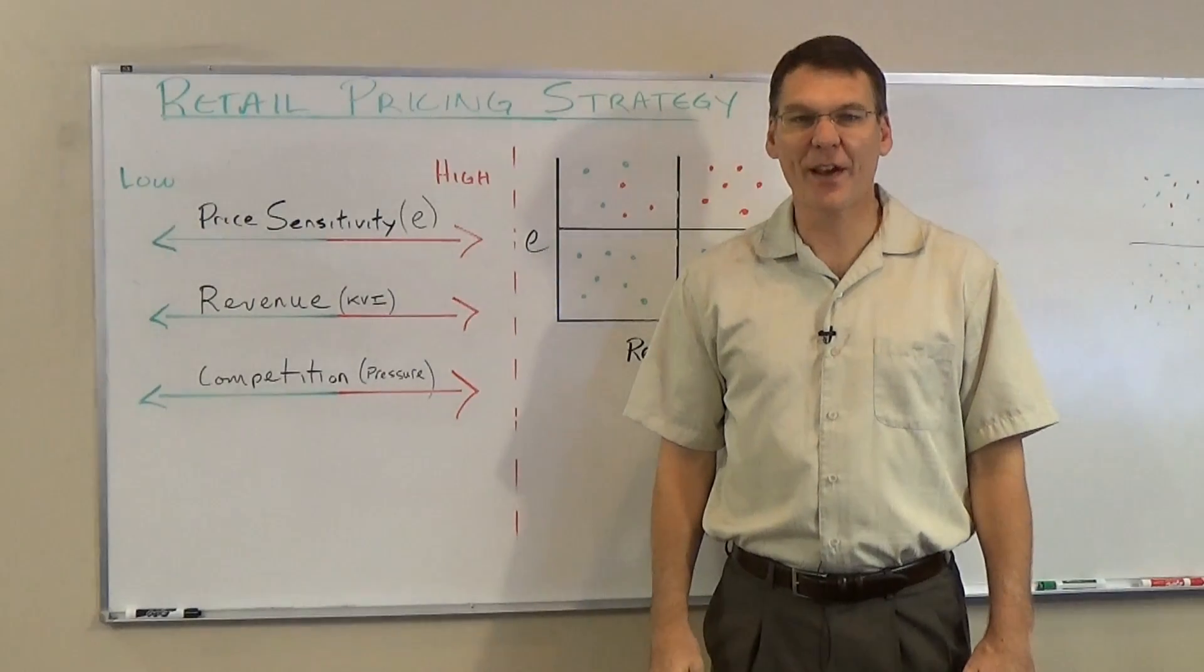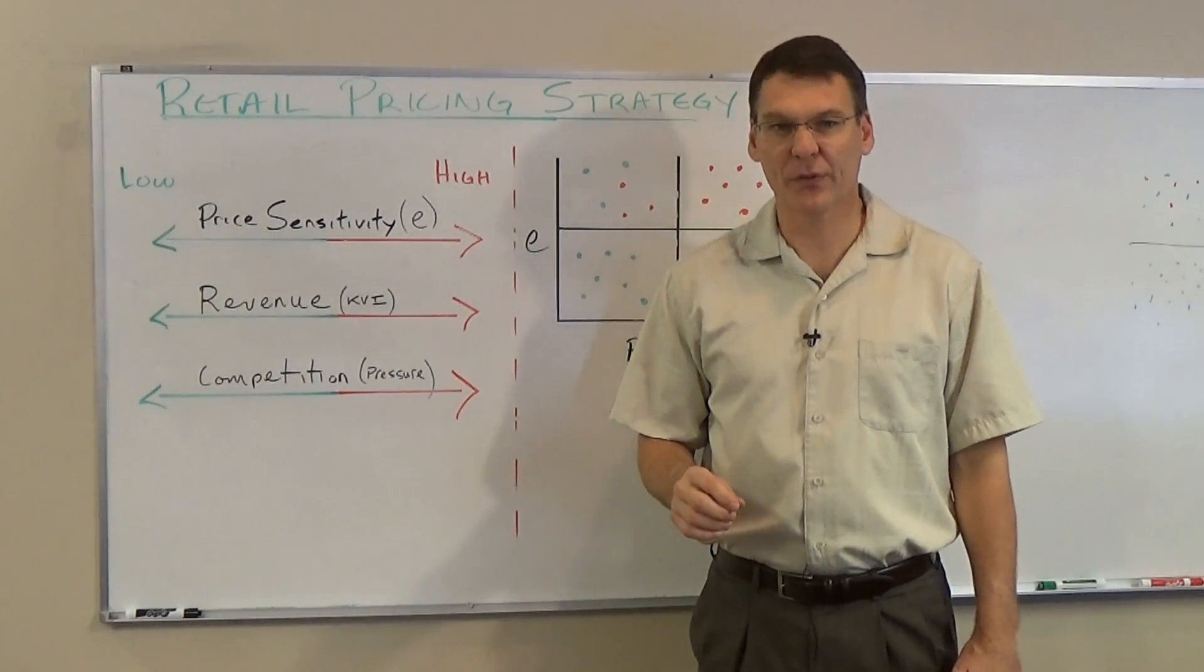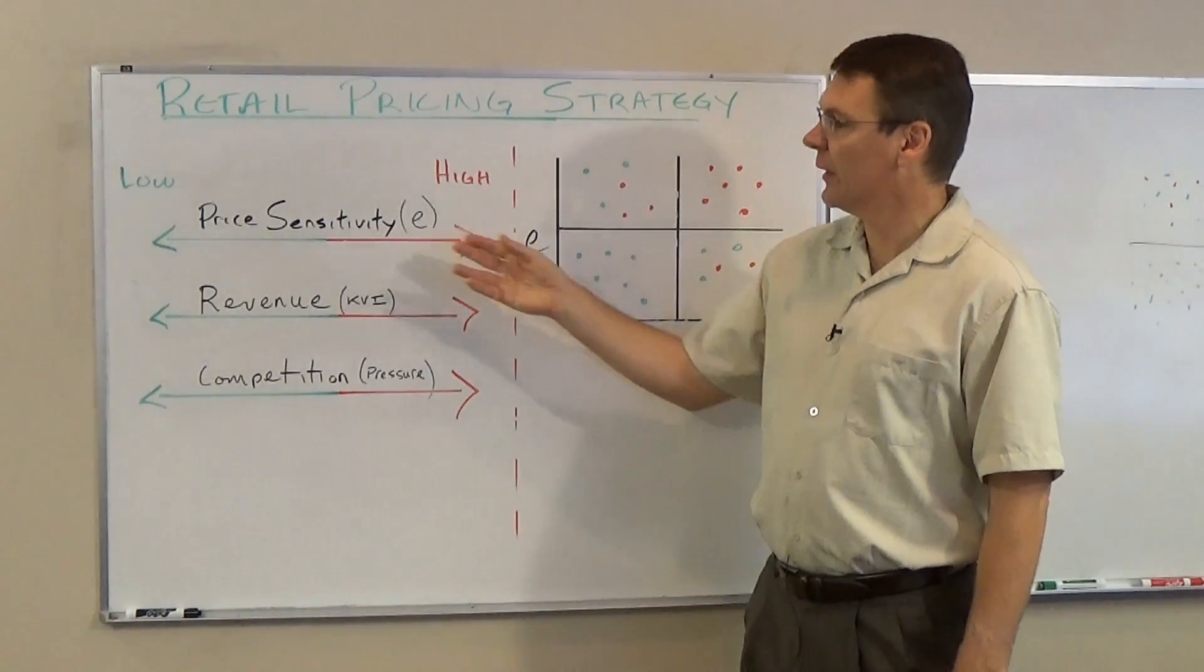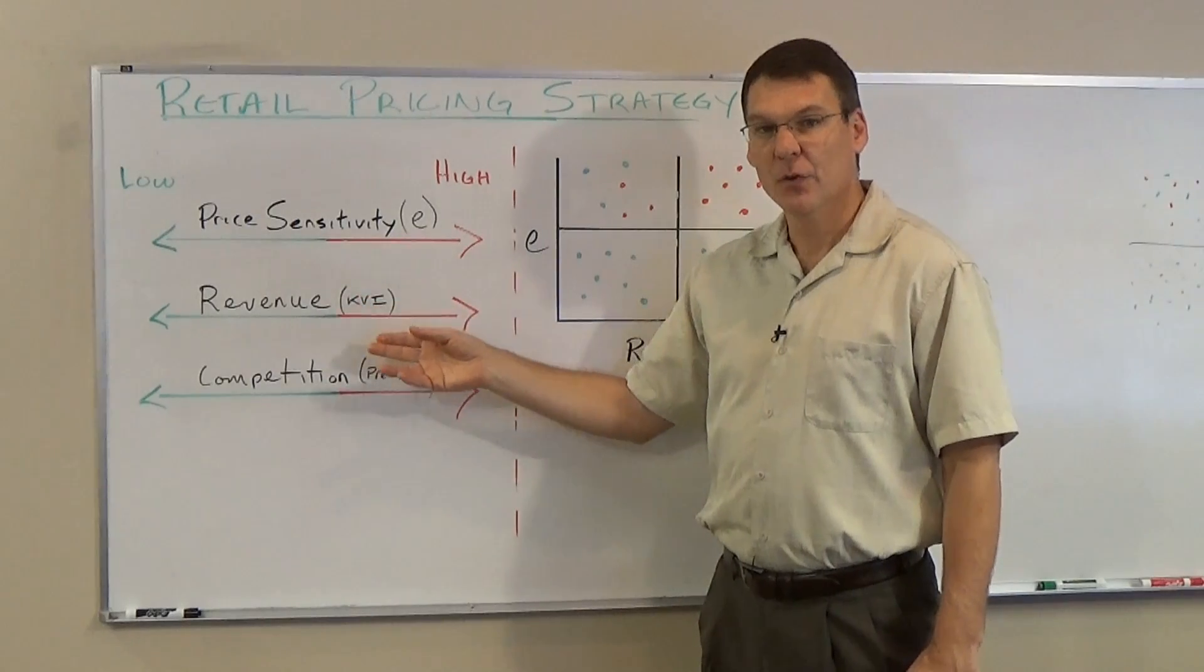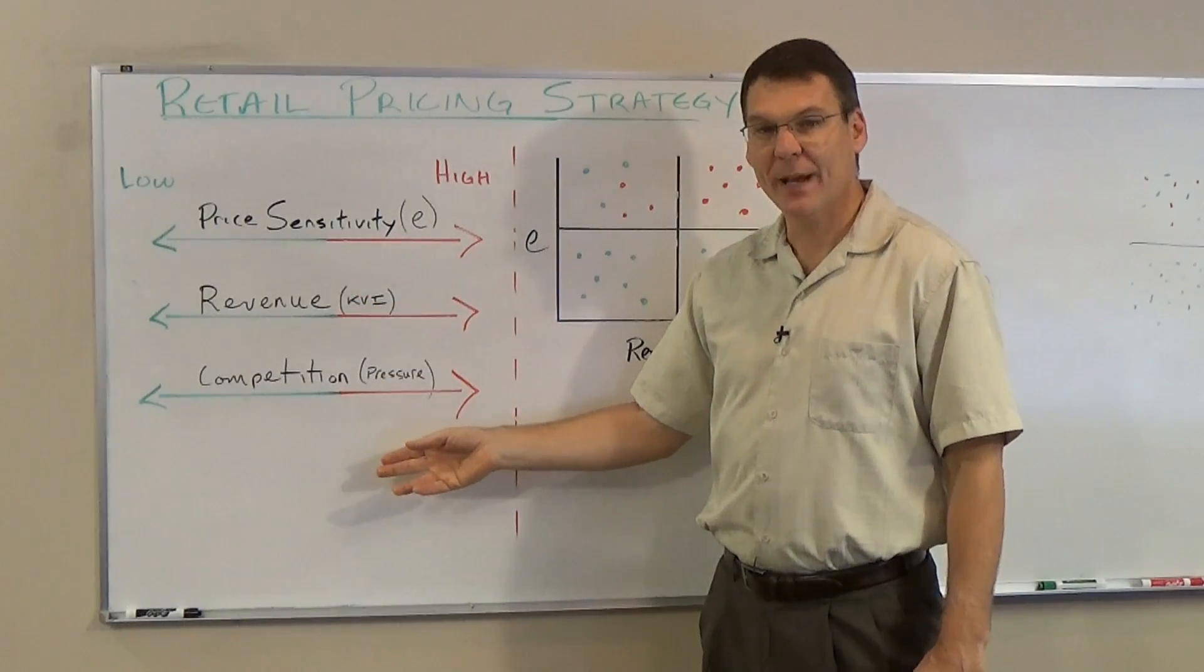Current retail science clusters products by three metrics: price sensitivity, revenue, and competitive pressure.